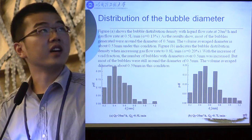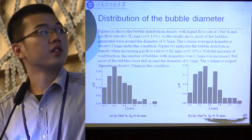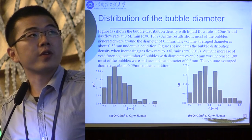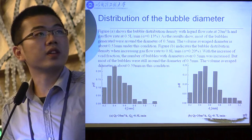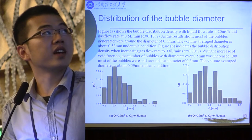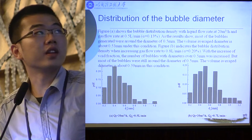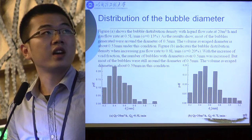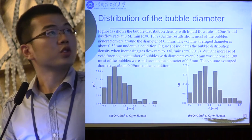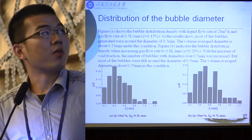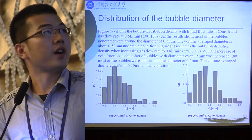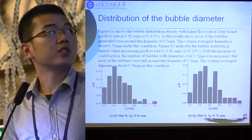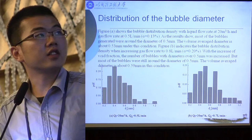Here are the results of the bubble diameter. The left figure shows the bubble distribution density with liquid flow rate at 20 cubic meters per hour and gas flow rate at 0.5 liters per minute. The void fraction is 0.3%. As the result shows, most of the bubbles generated were around the diameter of 0.5 millimeter. The volume average diameter is about 0.53 millimeter under this condition.